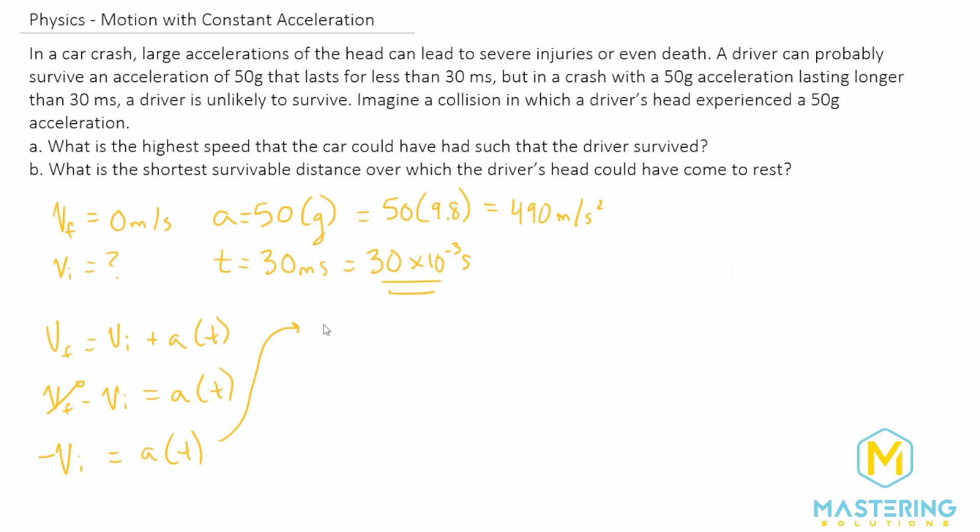So we have positive V initial and not negative initial. So we'll have V initial is equal to a negative acceleration times time. So now we have the initial velocity solved for.